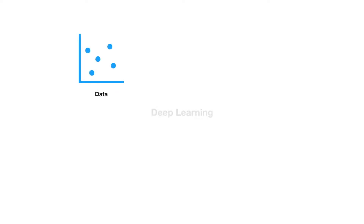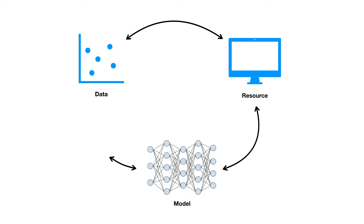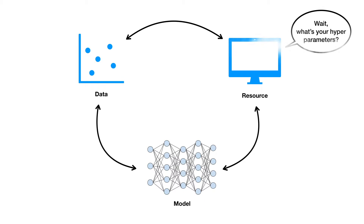Deep learning has been an emerging technique in modern artificial intelligence. A good deep learning model often requires a large amount of training data, a considerable amount of computation resource, and a well-curated neural network architecture. Now you may ask, is that everything we need to train a good model? And the answer is no. There is an important missing piece here, which is called hyperparameter tuning.